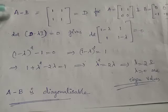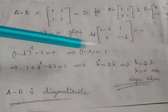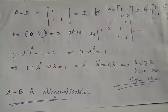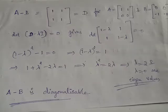When we take the difference between A and B, we obtain the matrix [[1,1],[1,1]]. Using the characteristic equation, we obtain distinct eigenvalues λ=2 and λ=0. Since we have obtained distinct eigenvalues, we also get distinct linearly independent eigenvectors, so we can conclude that A minus B is diagonalizable.